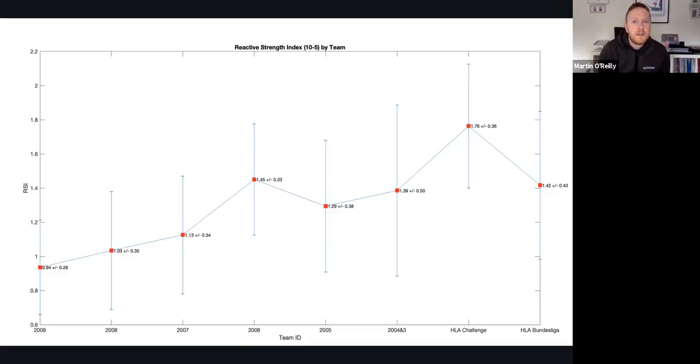After speaking with the coaches and the team, they mentioned that the 2006 team have really been focusing on strength conditioning and plyometric training, and this shows the potential in general to shift the curve upwards so that perhaps these players will go on to have a much higher RSI score when they reach senior playing age in the challenge or Bundesliga teams.